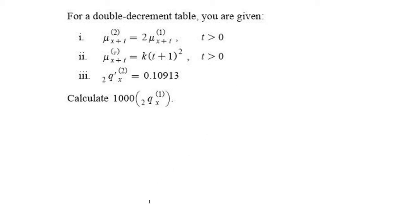We're given a double decrement table. The first thing we're going to start with is the total force of mortality. We know that's going to be the force of mortality for the first decrement plus the second decrement.